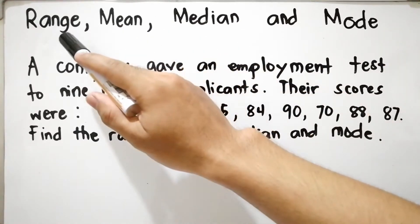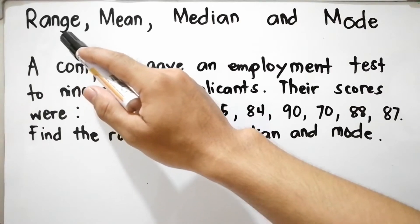Range is denoted as R which is the highest value minus the lowest value.